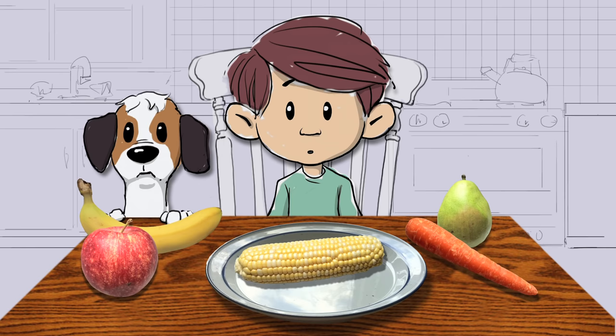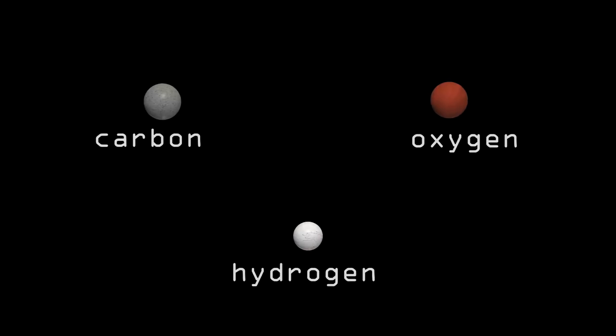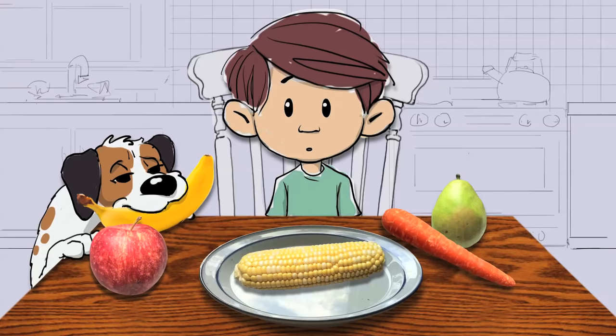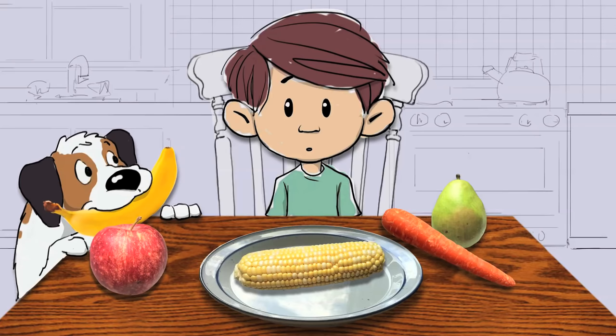Ever wonder where most of the foods you eat every day comes from? About 60% of the foods you eat is carbohydrates. As you can probably tell from its name, carbohydrates contain carbon, hydrogen, and oxygen. But where do these atoms originally come from and how do they join together to make delicious foods like fruits and pasta?